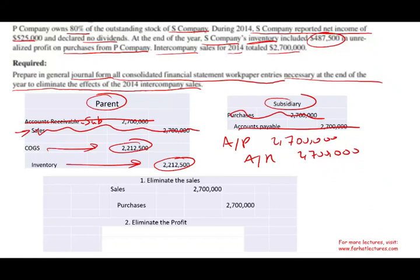We still have one thing to worry about — the profit. We have unrealized profit of $487,500. How do we eliminate that profit? One way is to increase cost of goods sold. Under the periodic system, we debit Inventory on the income statement — which means beginning inventory. Think of this as affecting cost of goods sold. Why use beginning inventory instead of directly debiting Cost of Goods Sold? Let's work through that.